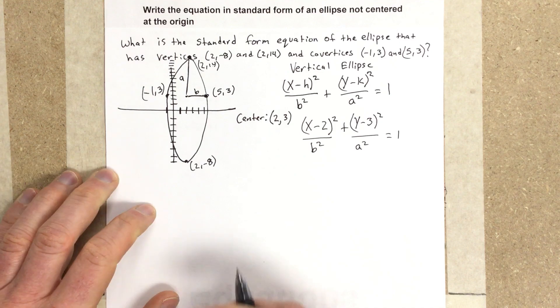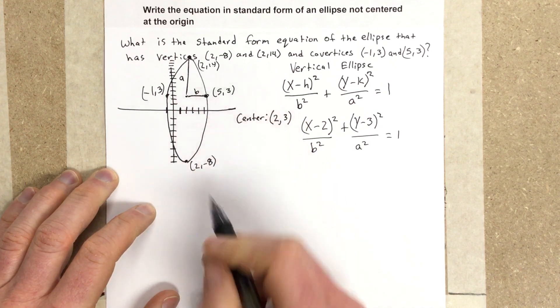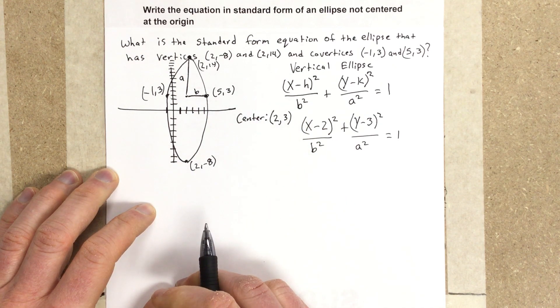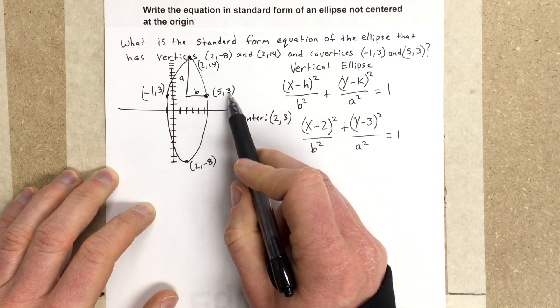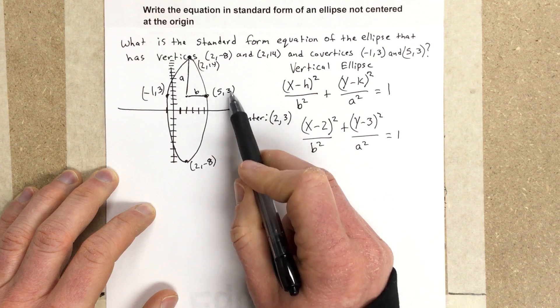Now I can find this distance by simply taking (5, 3) and subtracting it with the center. And I'm not going to need to subtract the y-values because they're the same, but I'm going to subtract the x-values here.